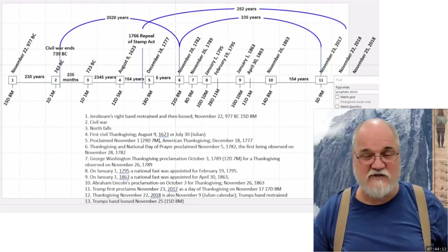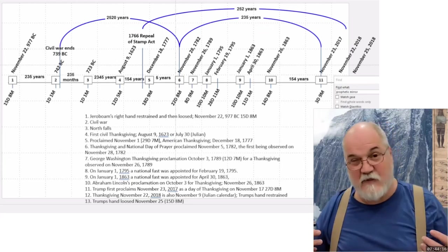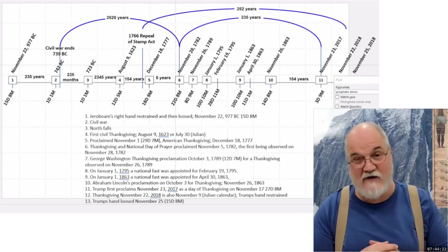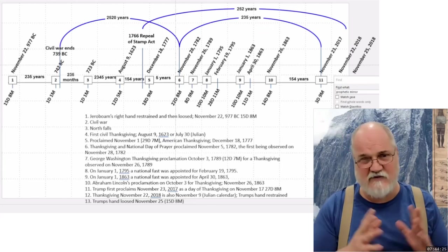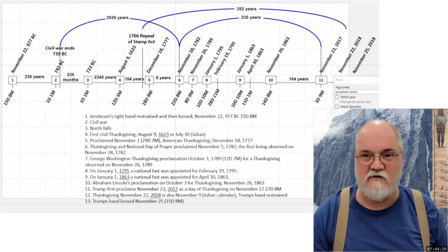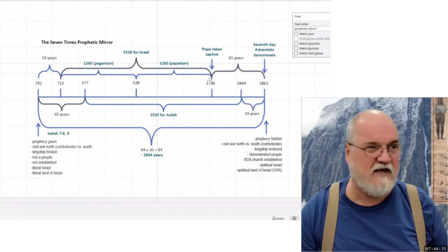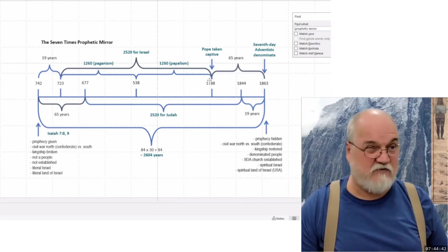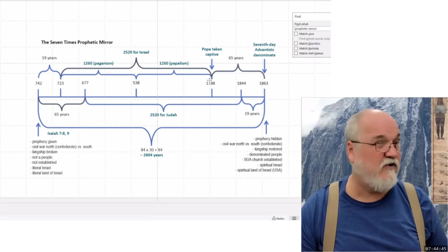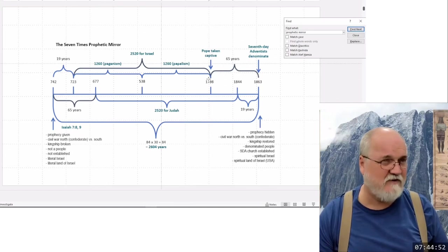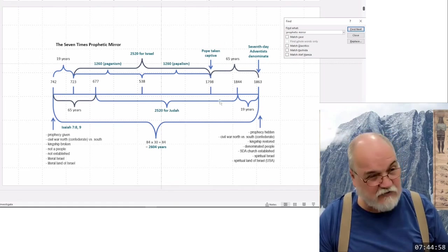And if we understand the joining of the two sticks, that's what is being shown here. The joining of the two sticks is going to be that period of time that ends these two 2520s, and then they're going to join. How did they join? We have the prophetic mirror, the seven times prophetic mirror. So if we've got this seven times prophetic mirror, we have two sticks: one for Judah and one for Joseph and Ephraim, his companions — the tribe of Ephraim. The line of Samaria is stretched over the line of Jerusalem.